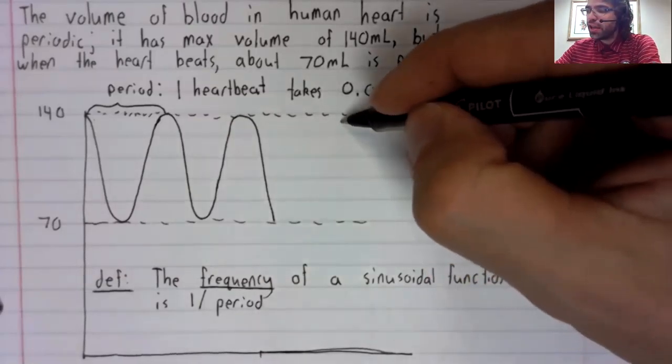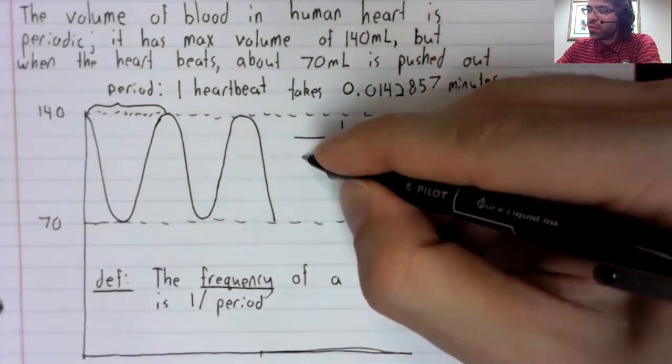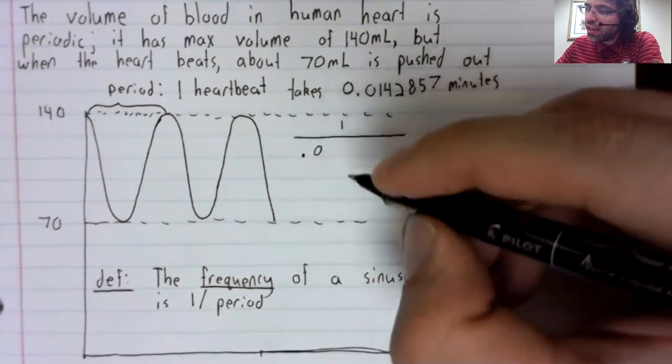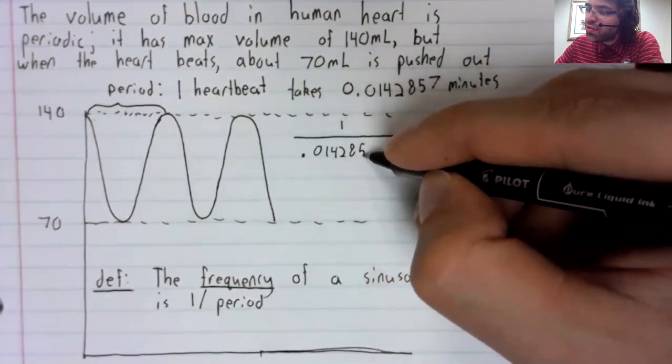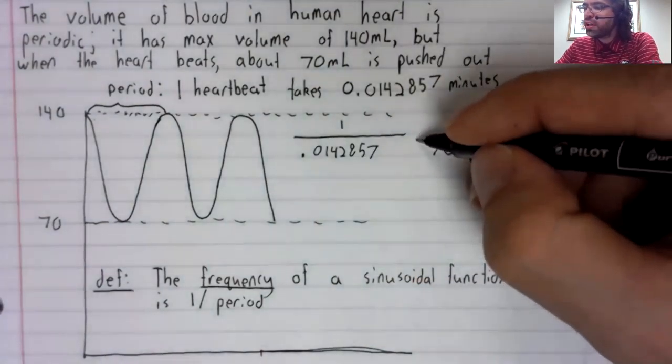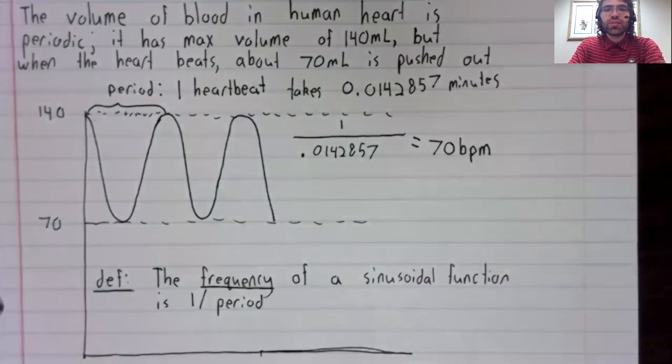And one divided by the length of a single period is the frequency, 70 beats per minute.